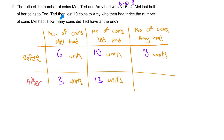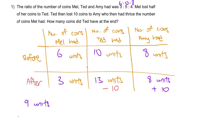After that, Ted then lost 10 coins to Amy. So we need to subtract 10 coins from Ted and give it to Amy, making Amy's total 8 units plus 10. Amy then had three times the number of coins Mel had. That means 3 units multiplied by 3, which equals 9 units, is equal to what Amy had: 8 units plus 10.